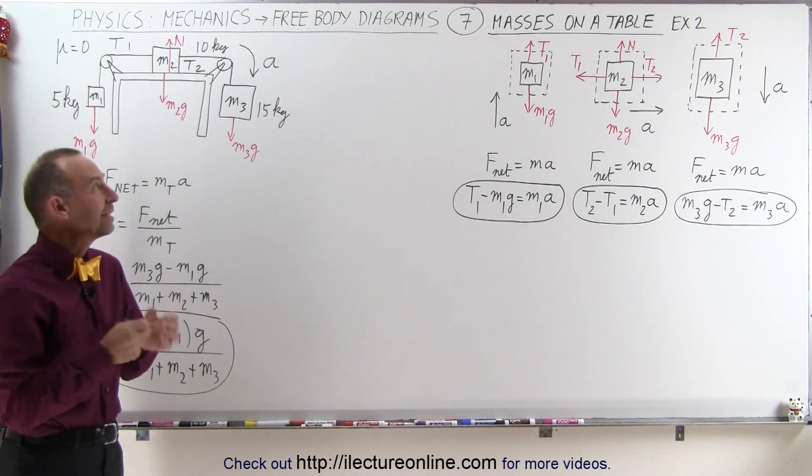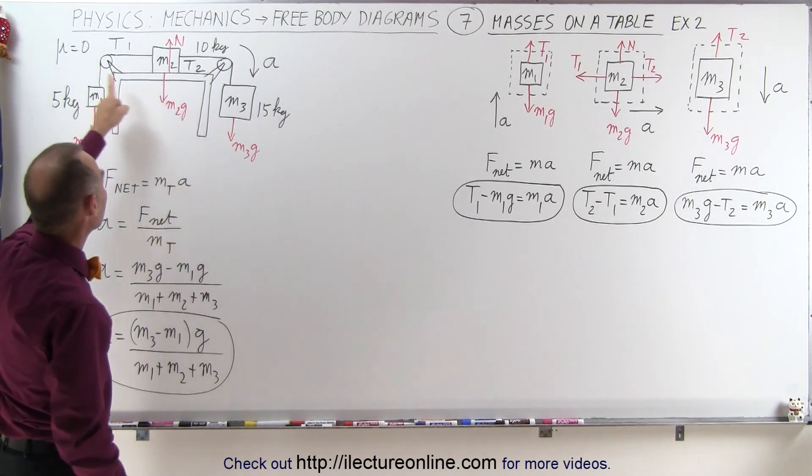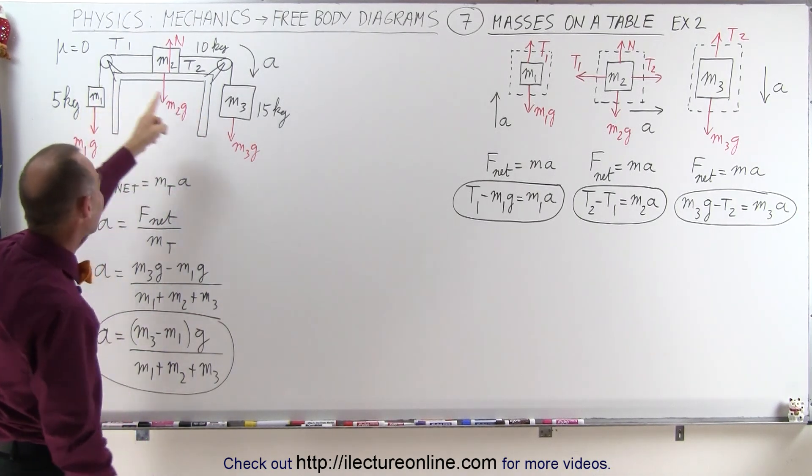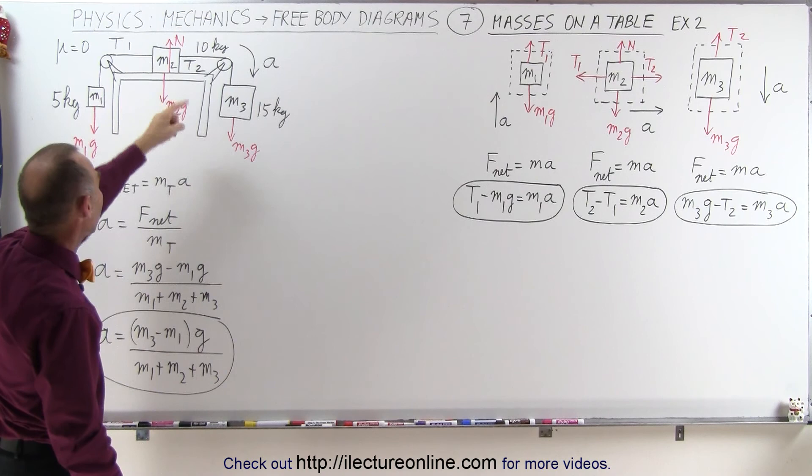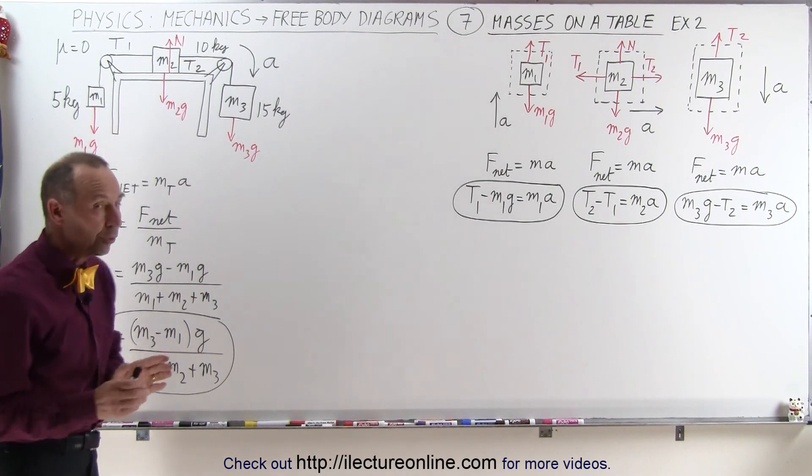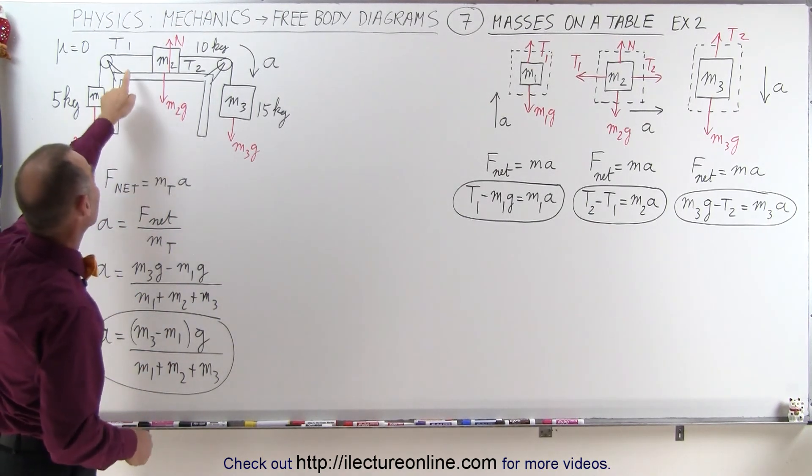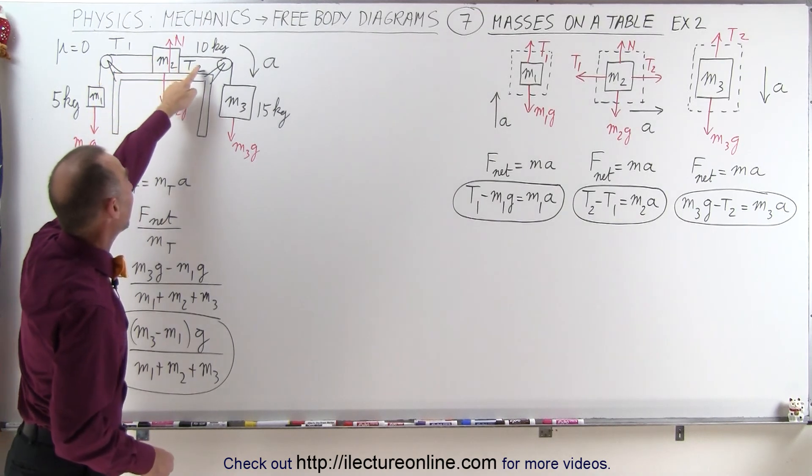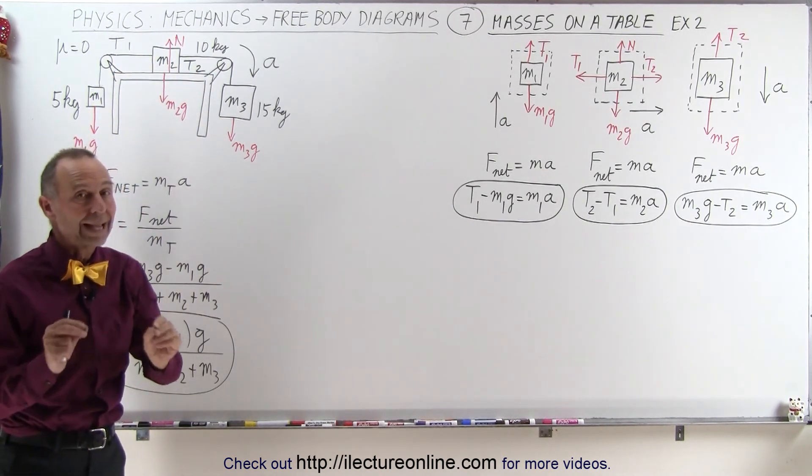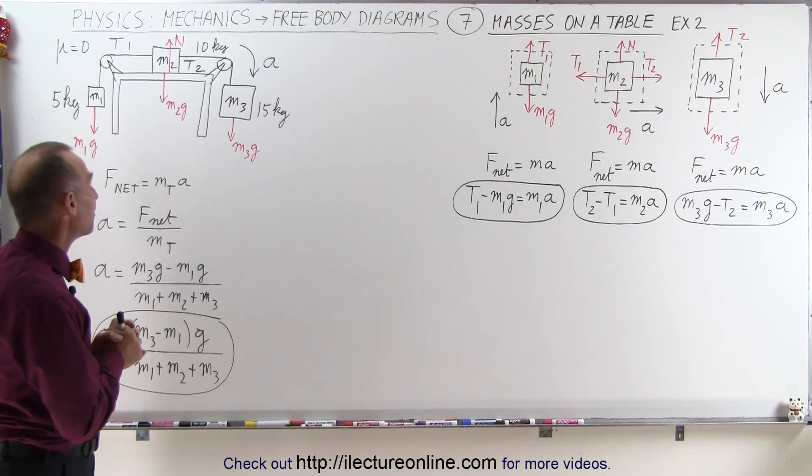In this case we have three different masses, one on top of the table and one hanging from each side of the table via a pulley and two strings. Notice because of that we have two different tensions, the tension in string 1 and the tension in string 2, and they are not necessarily the same, most likely not the same.